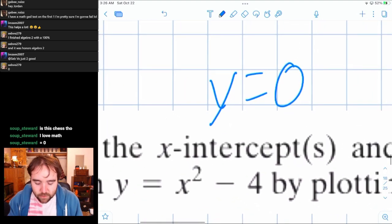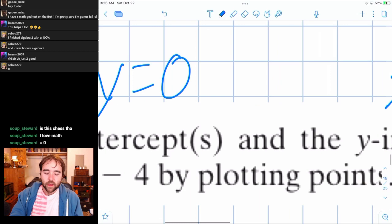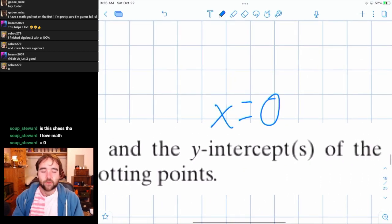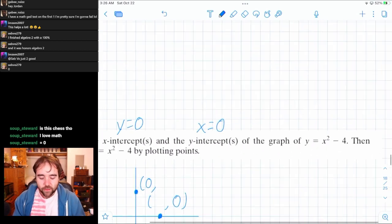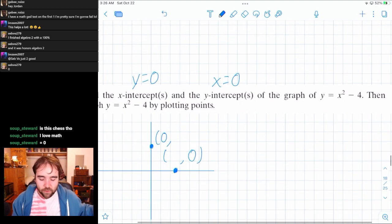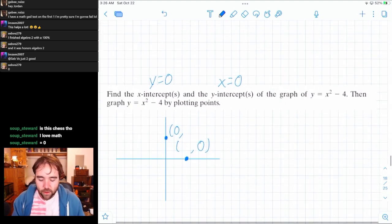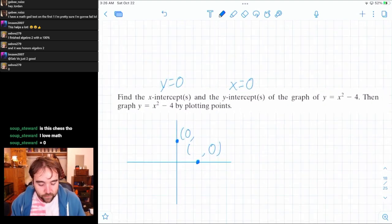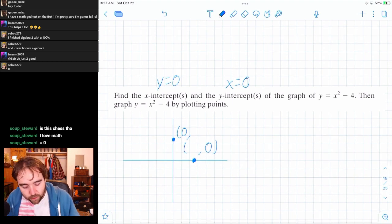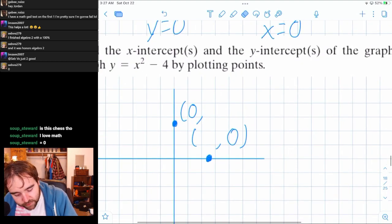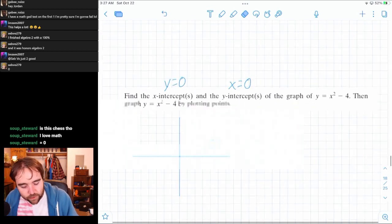So to get an x-intercept, you set the y-value equal to zero. To get the y-intercept, you set the x-value equal to zero. That's every type of function you have, no matter what, throughout all four years of your high school. So let's do that to graph this. Let's erase these theoretical intercepts that I drew and find the real intercepts.